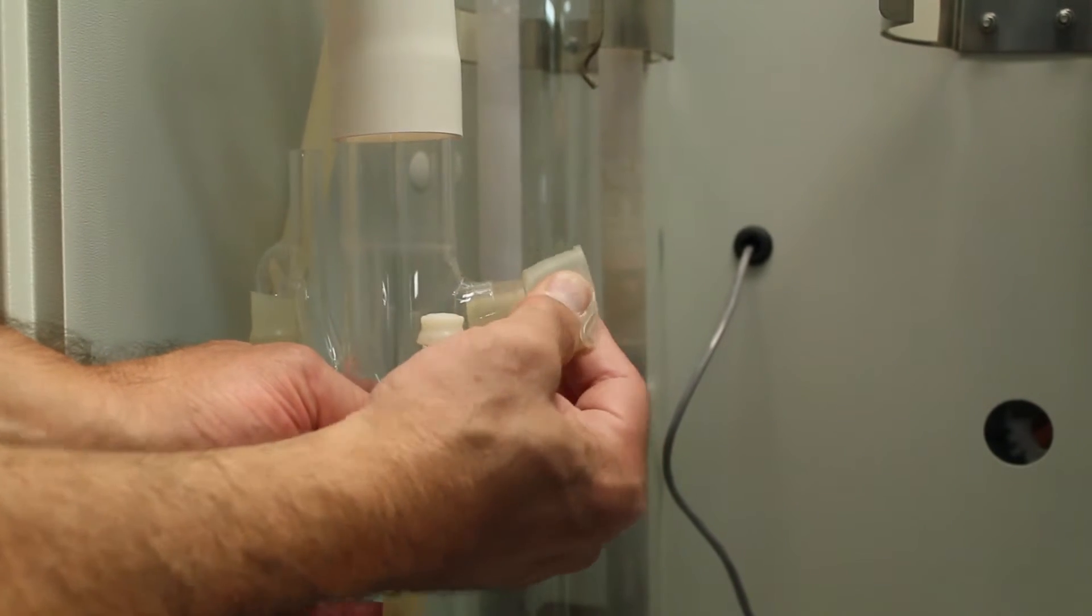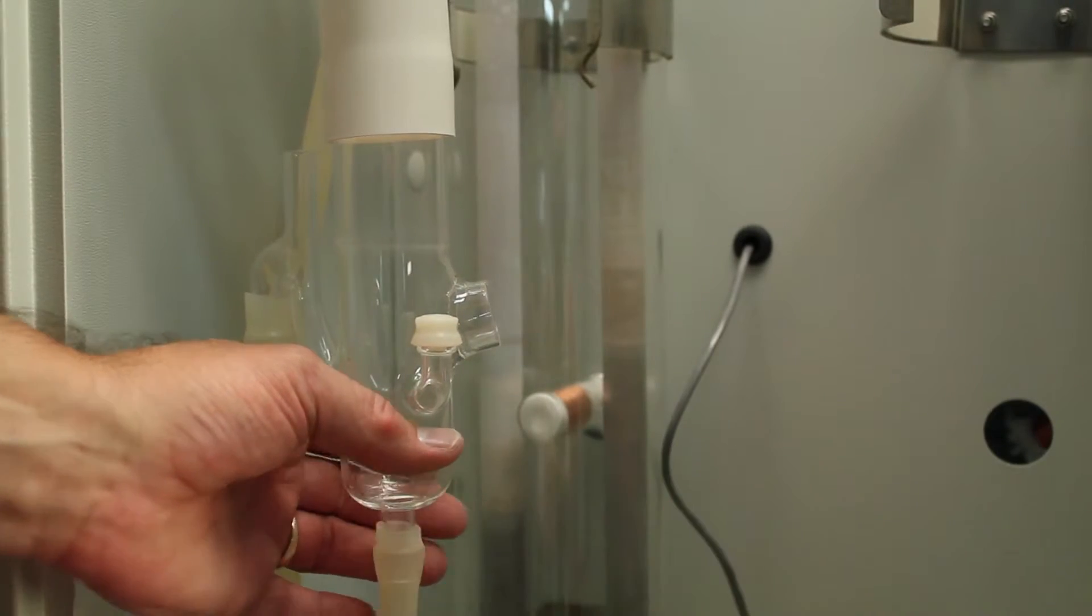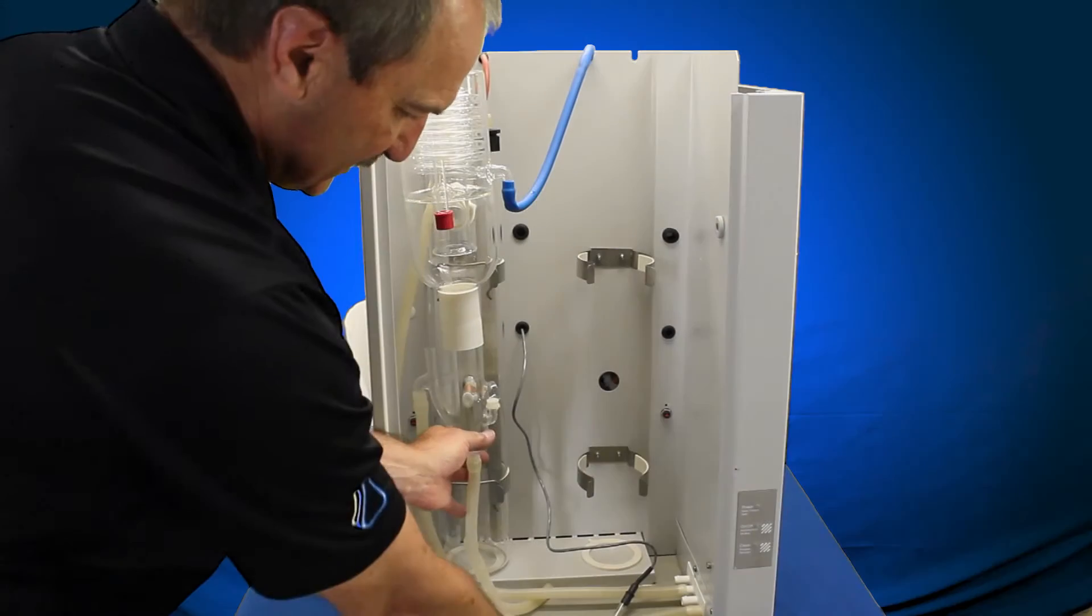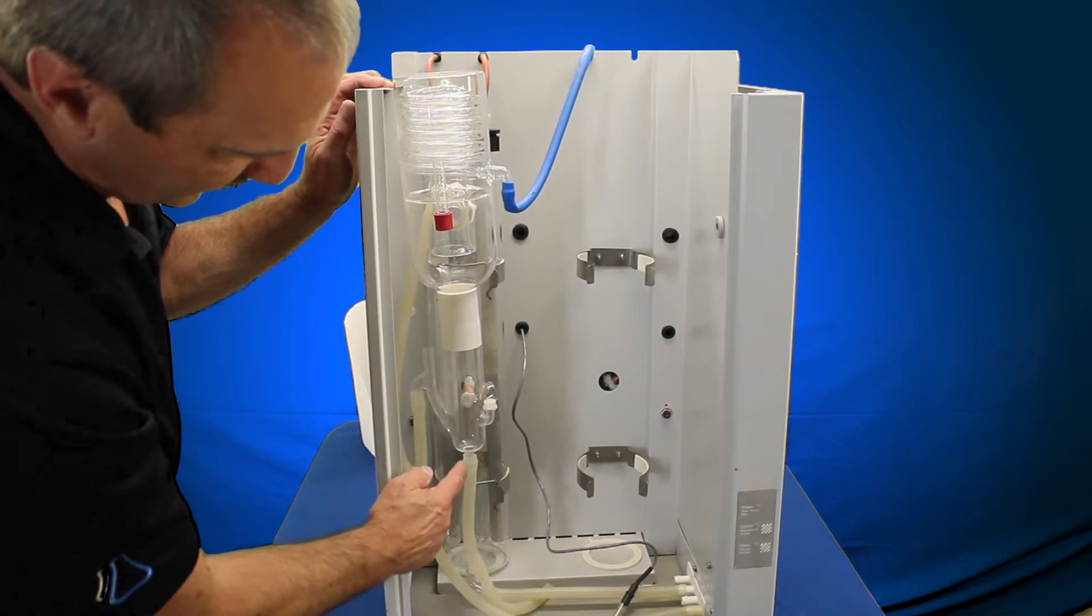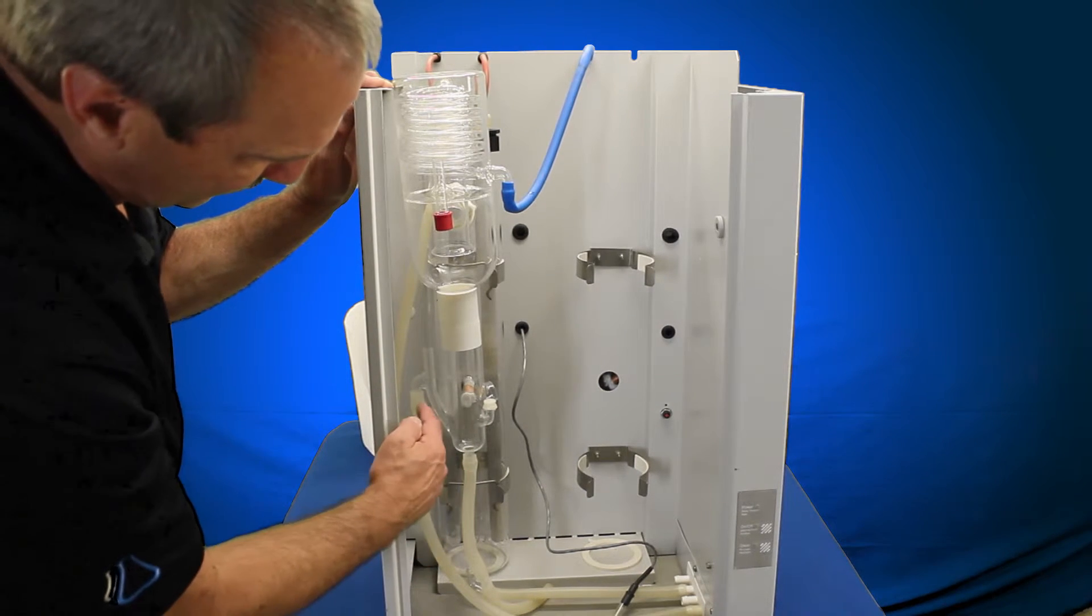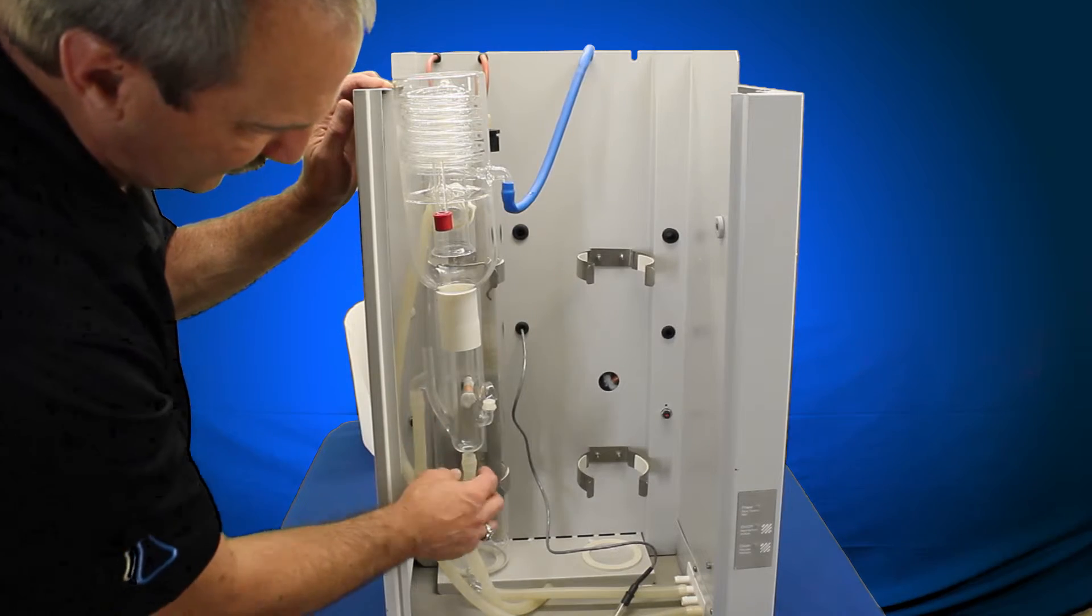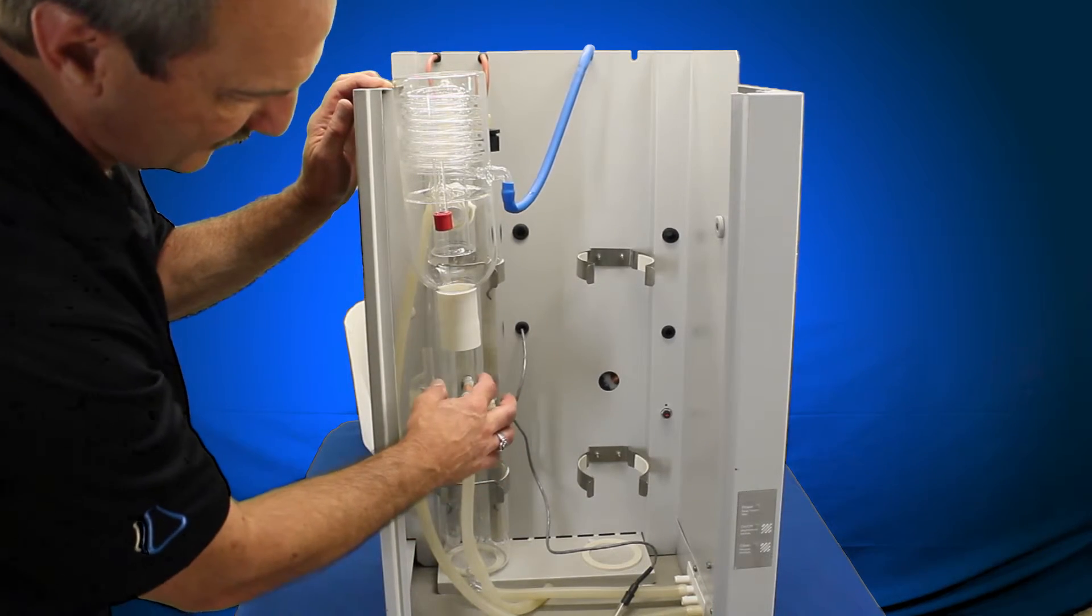The boot, you just squeeze the boot together, pull that back, remove that, set that aside because you're going to reuse that. Next thing we're going to do is we're going to cut the drain tube and the drain tube here so we can pull the tubing off and then pull the constant level device out.